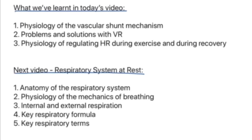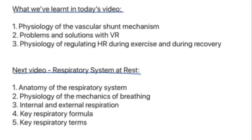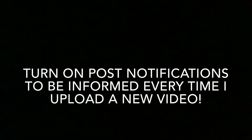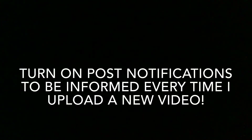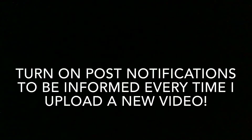To recap what we've learned today: firstly, the physiology of the vascular shunt mechanism. Secondly, the problems and solutions with venous return. Thirdly, the physiology of regulating heart rate during exercise and during recovery. Moving into the next video, we'll look at the respiratory system at rest — covering the anatomy of the respiratory system, the mechanics of breathing, internal and external respiration, key respiratory formulas, and key respiratory terms. Thank you everyone for watching — please subscribe and share this video with friends studying OCR A-level PE.